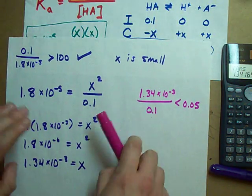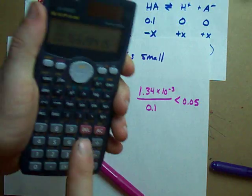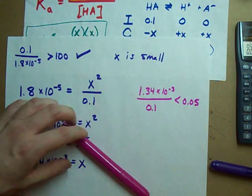If it's less than 5%, which it is in the case of my calculation, yep, less than 5%. You're good to go.